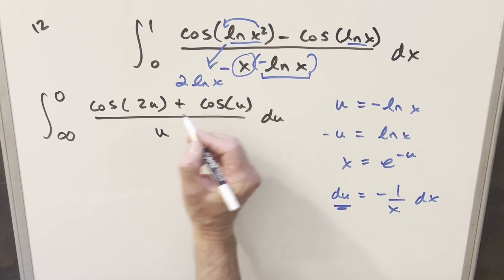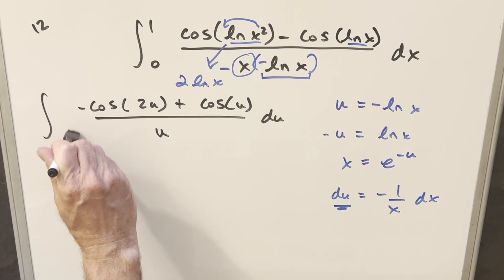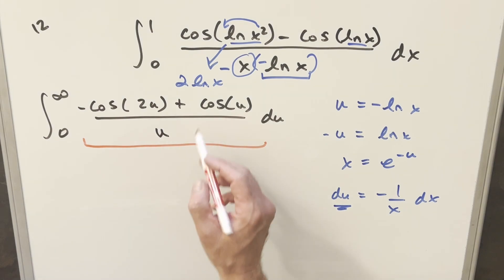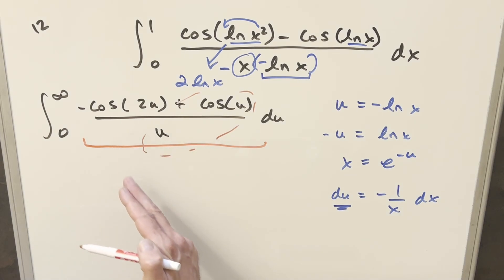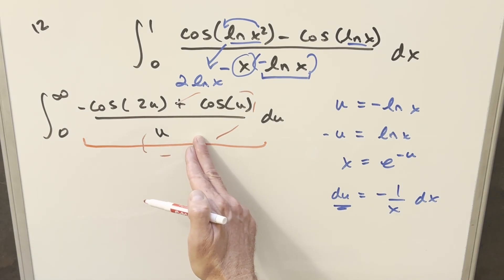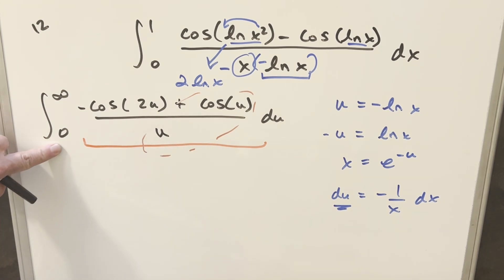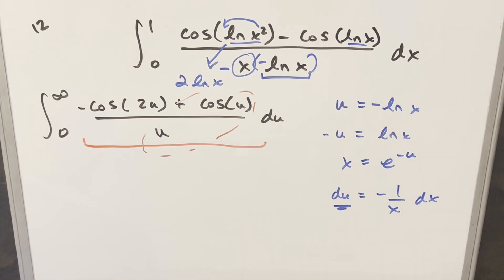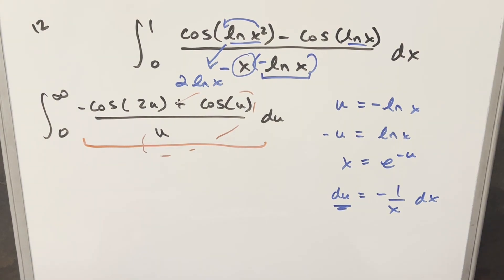From here, I'll flip the bounds using the minus sign so infinity is on top. Now we have a problem: if you split this into two integrals, the integral of cosine u over u and cosine 2u over u can't be done in terms of standard functions for the indefinite integral. And even with these bounds, if you split them up, neither integral converges. So you might think we need to give up — but even though separately these diverge, together we can actually do this using Feynman's trick.